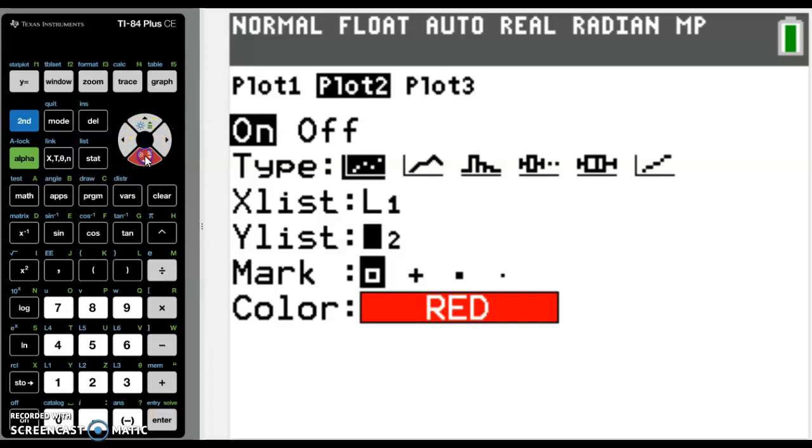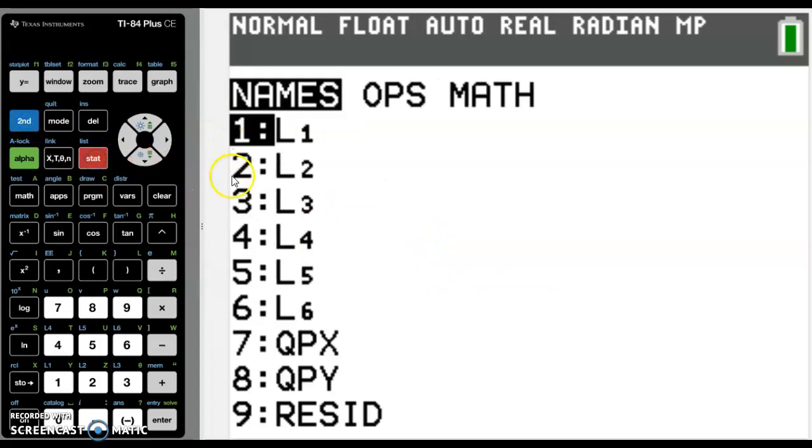And it's still list 1 because it's still the x values. But instead of list 2, we're going to write resid there. And that is found in list. And it should be number 9 or around about there. It may be in a different place, but it would be called resid.